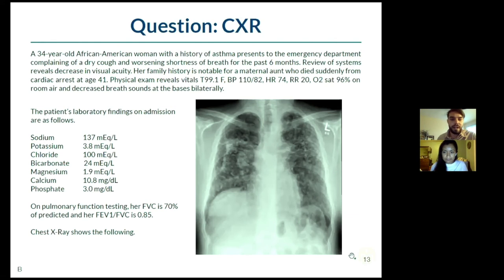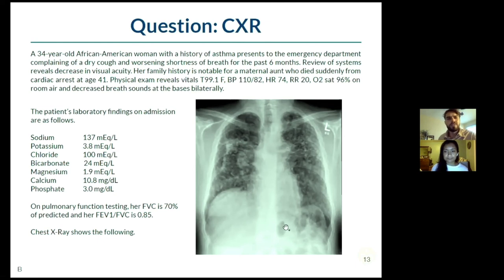I would probably start with pulmonary function testing: FVC is 70% and her FEV1/FVC ratio is 0.85. When I go back to the beginning of this question, I now have a very different differential in mind - restrictive lung diseases rather than obstructive lung diseases.